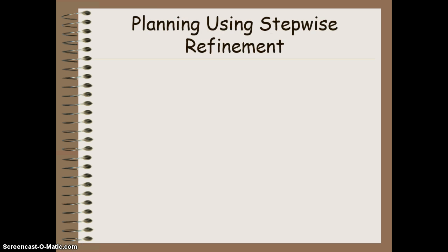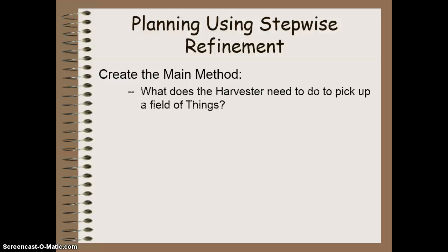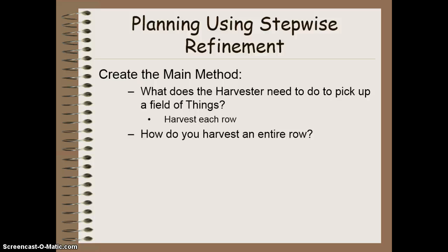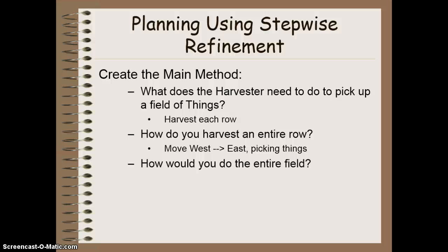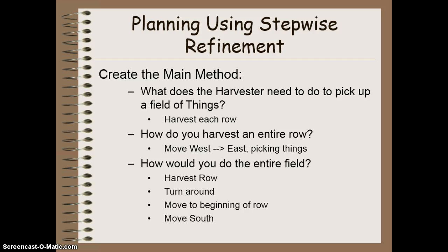With that being our particular problem, we need to start thinking about how we're going to solve this. First, we create our main method, and we ask ourselves: what does the harvester need to do to pick up a whole field of things? We can answer that by saying we want to harvest an entire row of things. To harvest an entire row, we move from west to east, picking up things as we go until we get to the end of the row. For an entire field, you would harvest a row, turn around, move back to the beginning of the row, move south, and do that six times.